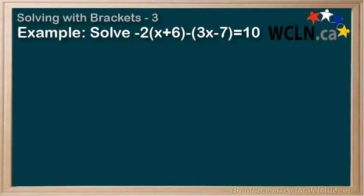Example 2. Solve negative 2 times x plus 6 minus in brackets 3x minus 7 equals 10. Now it's slightly different than the previous, and this is about as tough as these get. So let's give it a try.